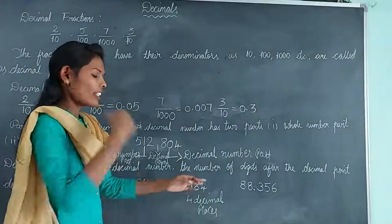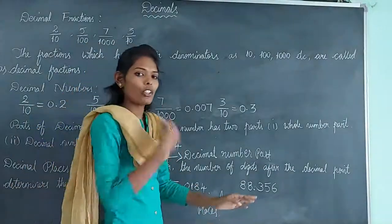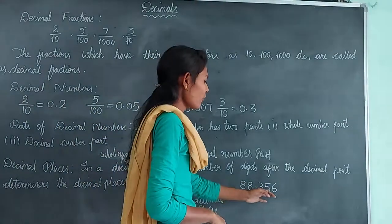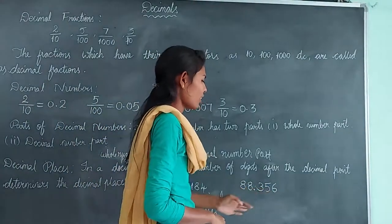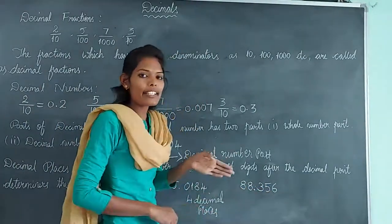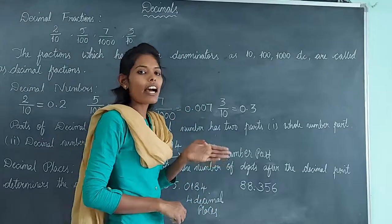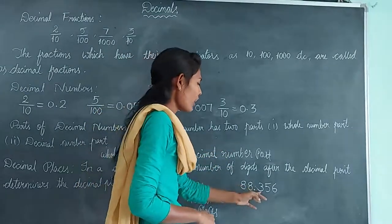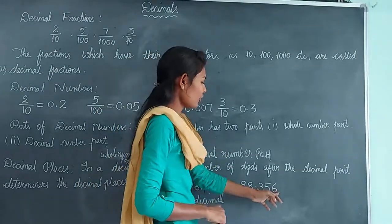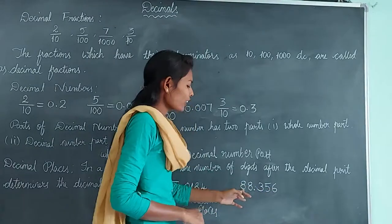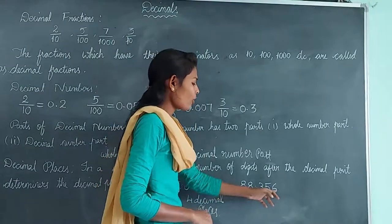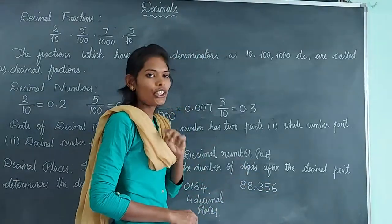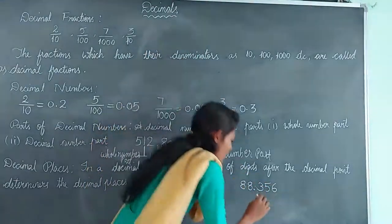Let us see one more example. Here we have 88.356. How many digits are there after the decimal point? Count 1, 2, 3. So 88.356 has 3 decimal places.